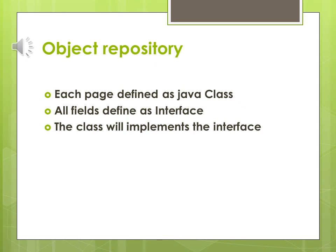Object repository is a very important part in page object model and interviewers will ask you about it. In page object model, you will be creating objects for all the web elements used in your web pages, and those objects are saved in the object repository. The best answer you can give is: each page is defined as a Java class, all fields are defined as interfaces, and the class will implement those interfaces.